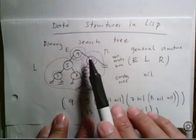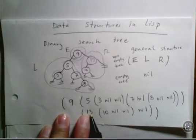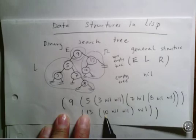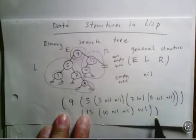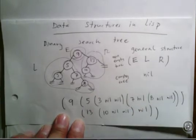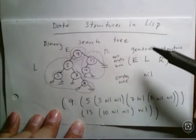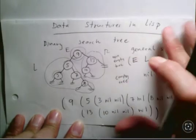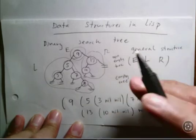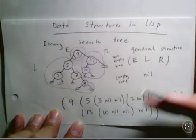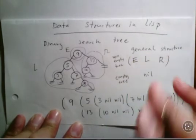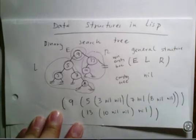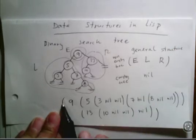The right subtree is 13, and the left of 13 is node 10 with nil and nil, and the right of 13 is nil. This is the idea of my binary search tree. This is not a standard — it's something I'm deciding: this is the way I'm going to store and interpret a binary search tree. Again, this is just a list.